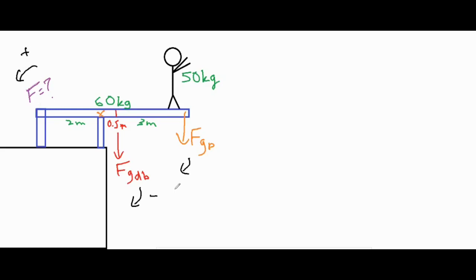So let's go ahead and set up our equation. Our equation will look something like this: our net torque, the sum of all of our torques is going to be the force over here times the lever arm of two meters and then that's going to be our unknown variable that we're looking for. And then we're going to subtract it from the torque of the diving board.